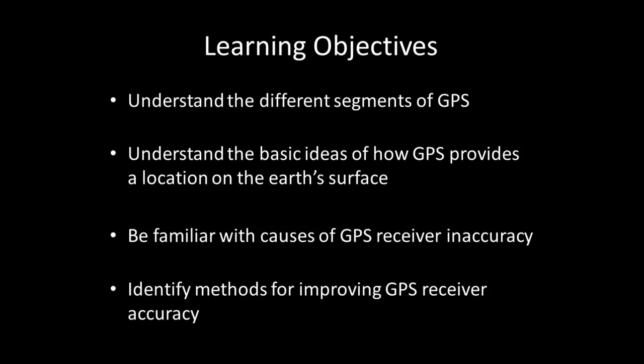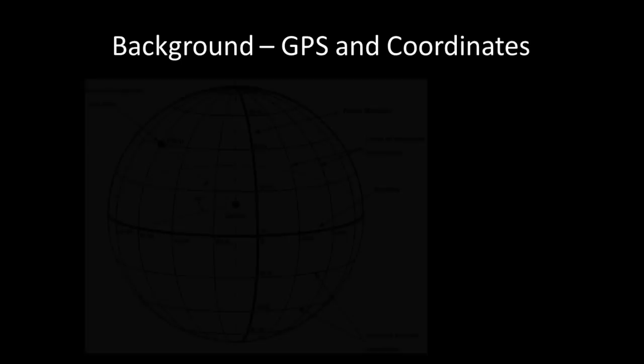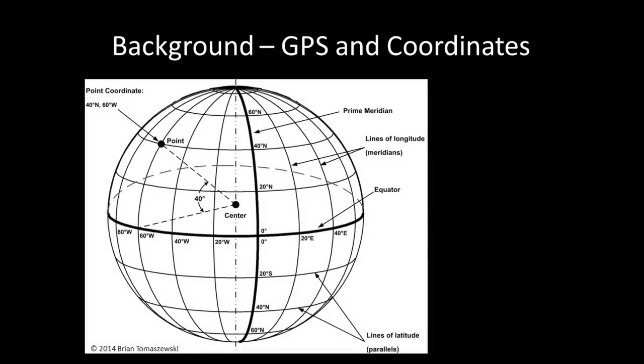Before we begin, let's go over a little background about GPS and coordinates. Longitude and latitude are angles measured relative to the plane of the prime meridian and to the plane of the equator. The angles are measured in degrees, expressed as degrees, minutes, seconds, or as what is known as decimal degrees.